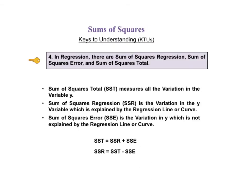KTU number 4 says, in regression there are sums of squares regression, sum of squares error, and sum of squares total. Sum of squares total, SST, measures all the variations in the variable y. Sum of squares regression, SSR, is that part of the total variation in the y variable, which is explained by the regression line or curve. Sum of squares error is that part of the total variation in y, which is not explained by the regression line or curve. So, SST equals SSR plus SSE. We'll use data to calculate SSE and SST. Then we'll subtract SSE from SST to give us SSR.